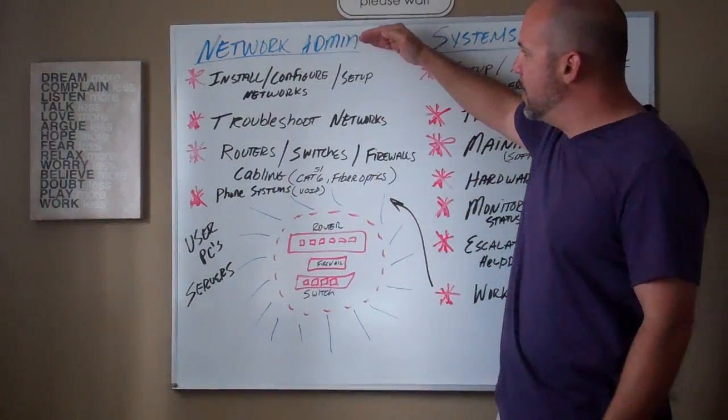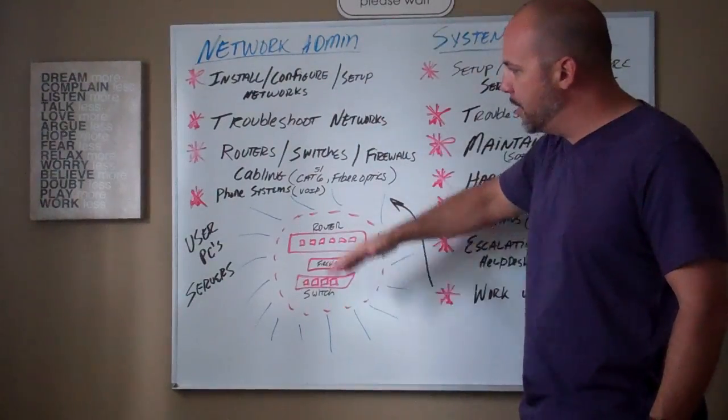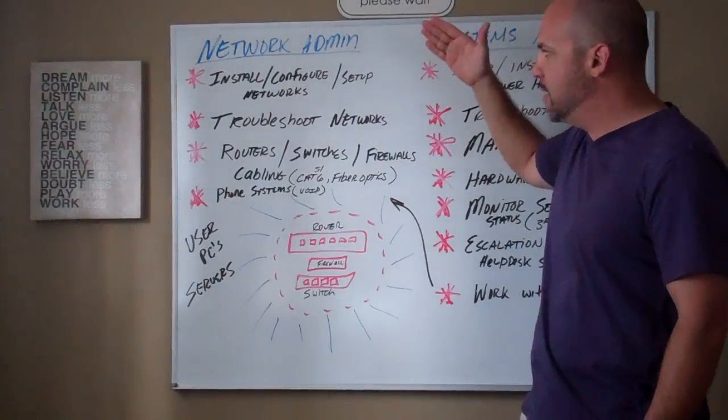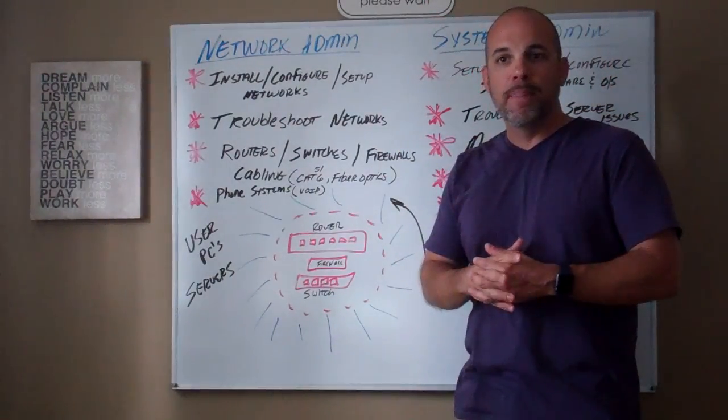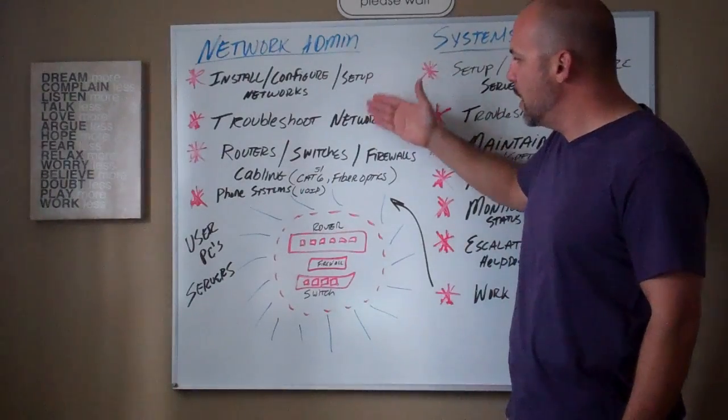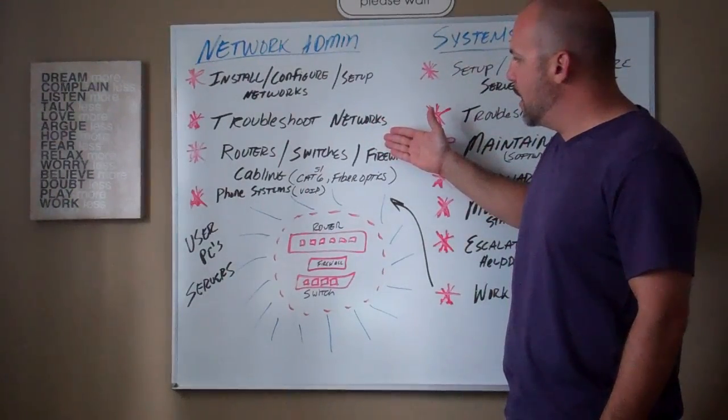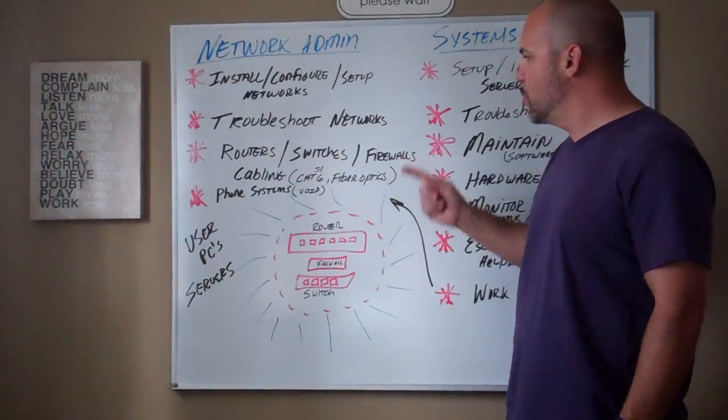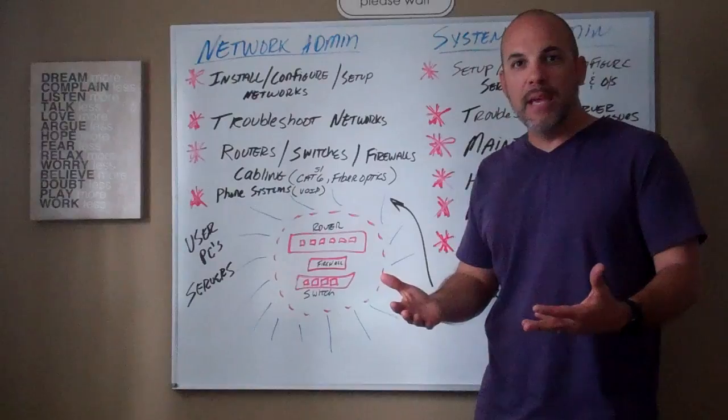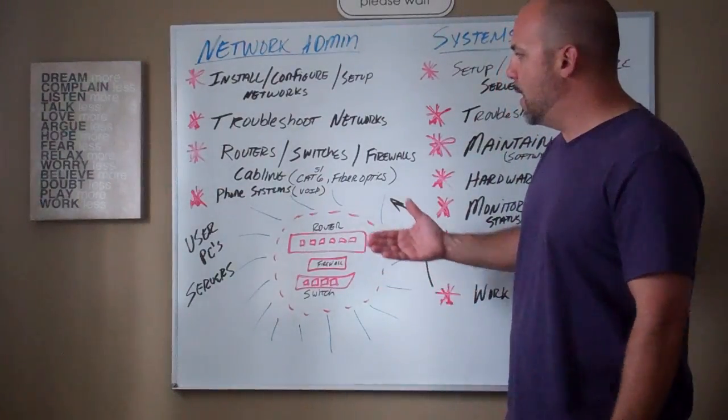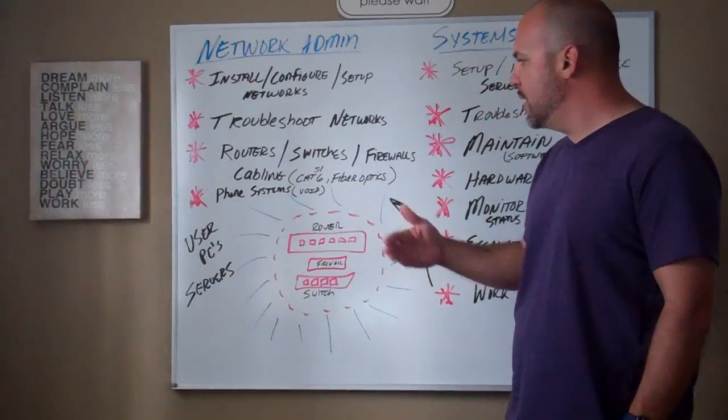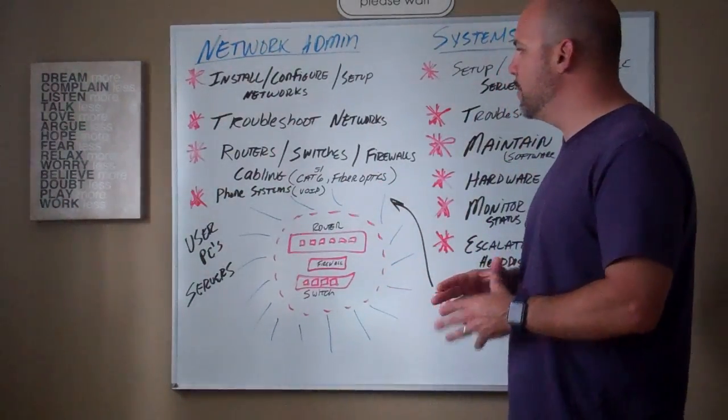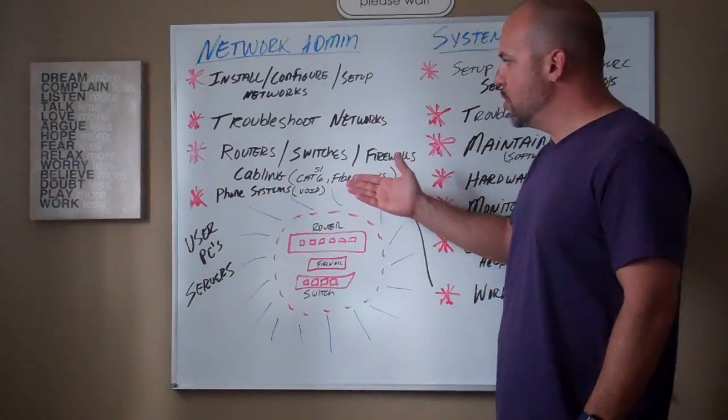And so, what the network administrator does is he takes care of all of this. So, they are responsible for installation, configuration, and setting up of networks. And what that means is that a network admin is basically working with these types of devices, which would be routers, switches, firewalls. They'll get into some of the cabling. Cabling could be the Cat5e and 6, fiber optics, kind of a mixture there, depending on the company.